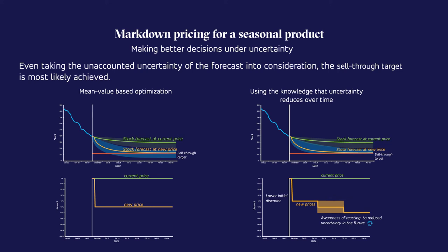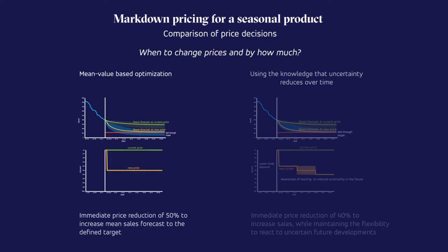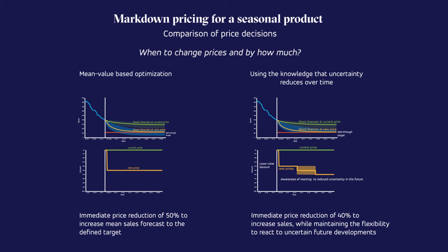Even from a human intuition, this is the better decision — that is, instead of applying an early deep first price reduction that we cannot reverse, we would rather apply a smaller initial price reduction and maybe do a second one when needed. This decision is not based on gut feeling. It's, in fact, based on the quantified uncertainty that is balanced against the benefit of an early price reduction. When we make a better decision taking uncertainty into account, we see a real difference in the prices. Moreover, we can even reduce the risk of leftovers at the end of the life cycle.